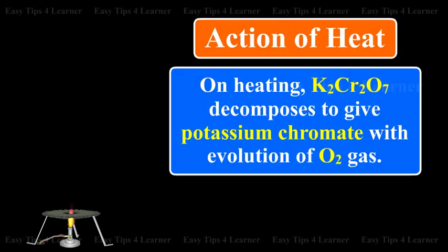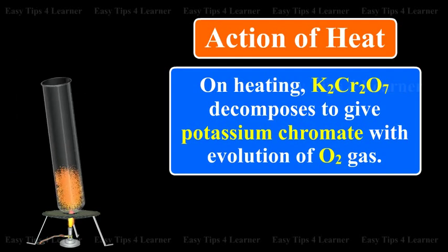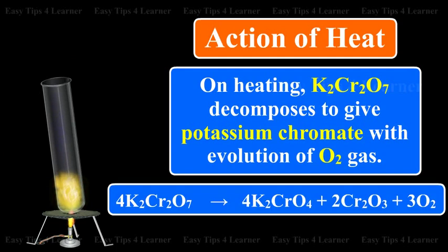Chemical properties of potassium dichromate. Action of heat: On heating, potassium dichromate decomposes to give potassium chromate with evolution of oxygen gas. 4K2Cr2O7 gives 4K2CrO4 + 2Cr2O3 + 3O2.